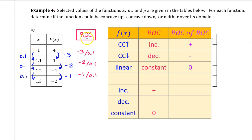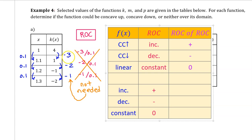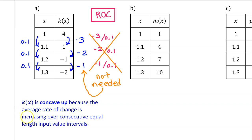Whenever we have equal length input value intervals, we can use a shortcut — we don't actually need to calculate the average rate of change. If the output values are increasing, the average rate of change is increasing. If the output values are decreasing, the rate of change is decreasing. This shortcut only works for equal length input value intervals. The change in output value goes from negative 3 to negative 2 to negative 1 — these values are increasing. Therefore, the average rate of change is increasing and the function is concave up. To justify: k of x is concave up because the average rate of change is increasing over consecutive equal length input value intervals.